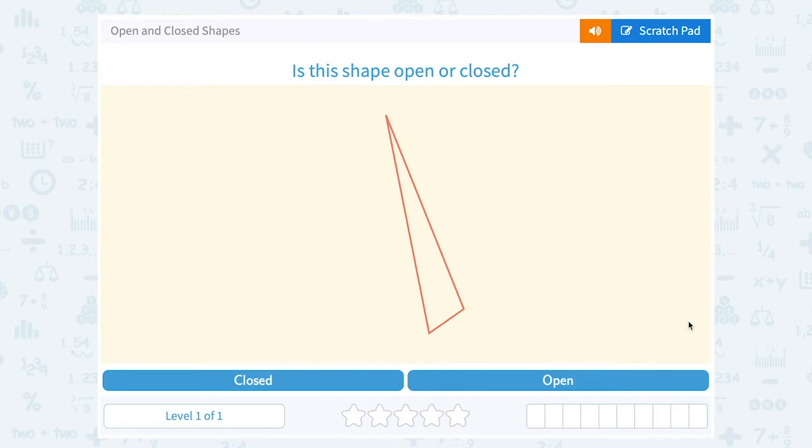Let's take a look at open and closed shapes. They asked us, is this shape open or closed? Okay, and we have a triangle.